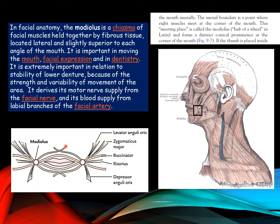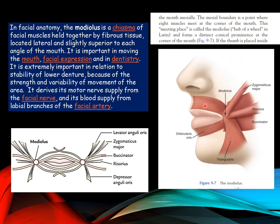The modulus is a point where eight muscles meet at the corner of the mouth, and this meeting place is called the modulus. In Latin, it means the hub of a wheel. This point forms a distinct conical prominence at the corner of the mouth.